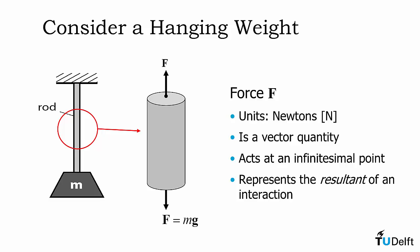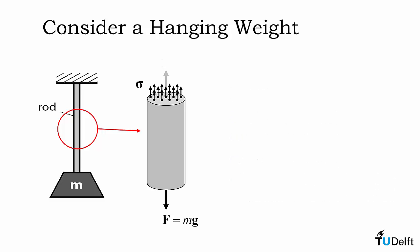The force is also a resultant of another interaction, and that is what is actually happening on that cross-sectional surface. We know that it is physically impossible for us to have a force acting at an infinitesimal point. In reality, that force will be distributed over that cross-sectional area. We will call this distributed force stress and denote it by the Greek letter sigma. We also know that if we integrate that stress over that cross-sectional area, we get exactly the resultant force.